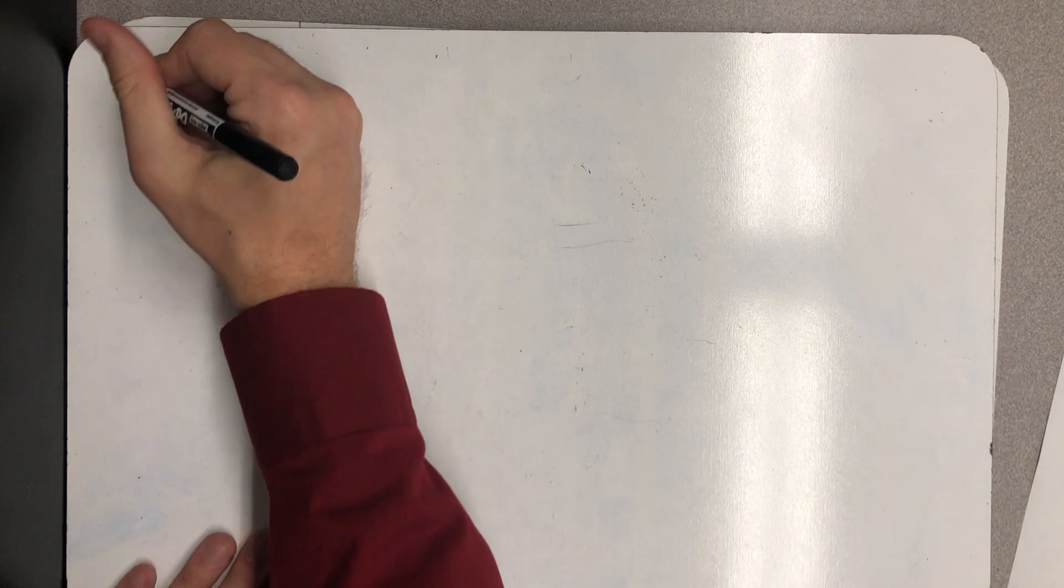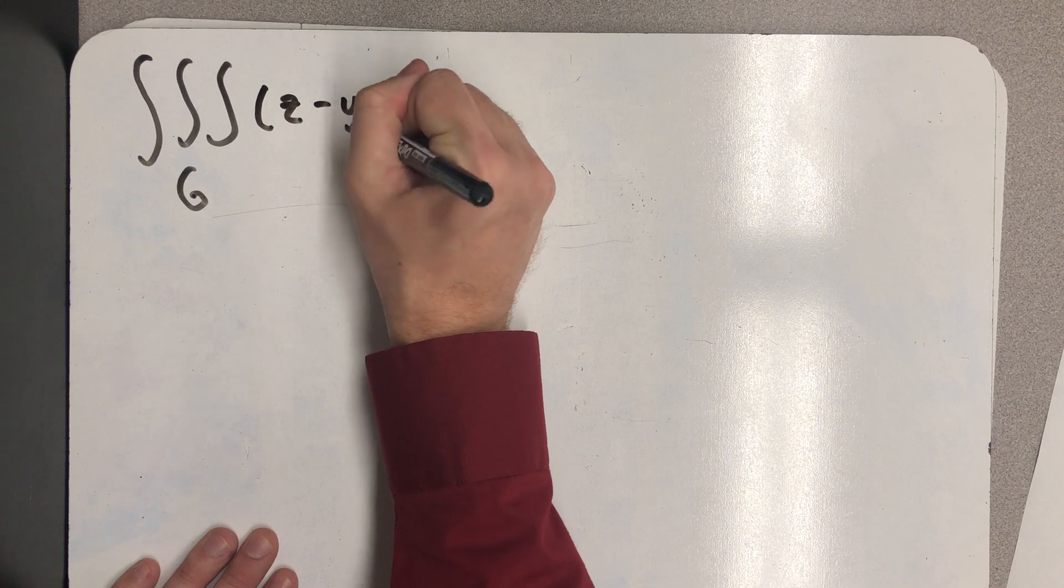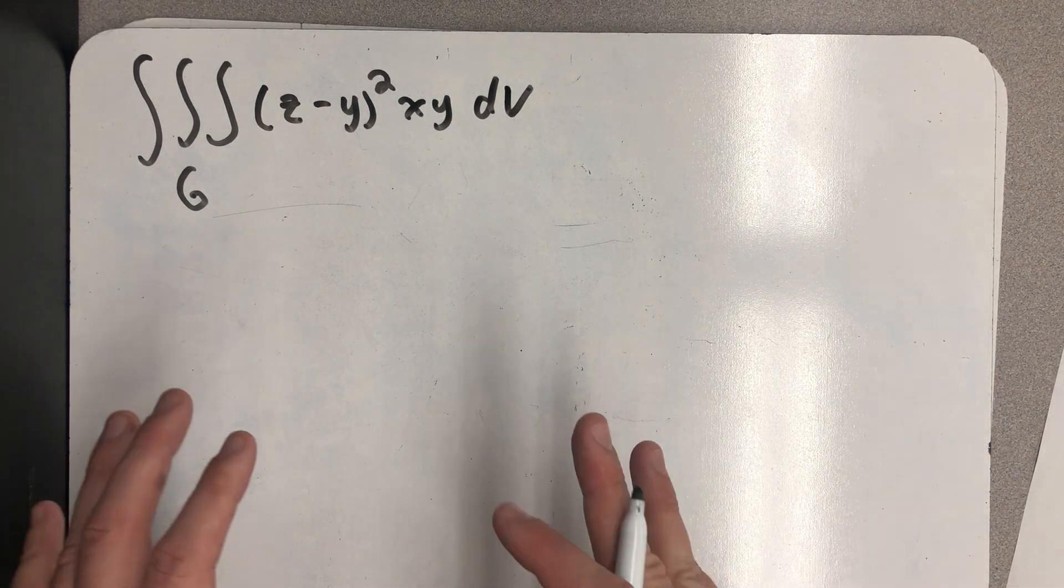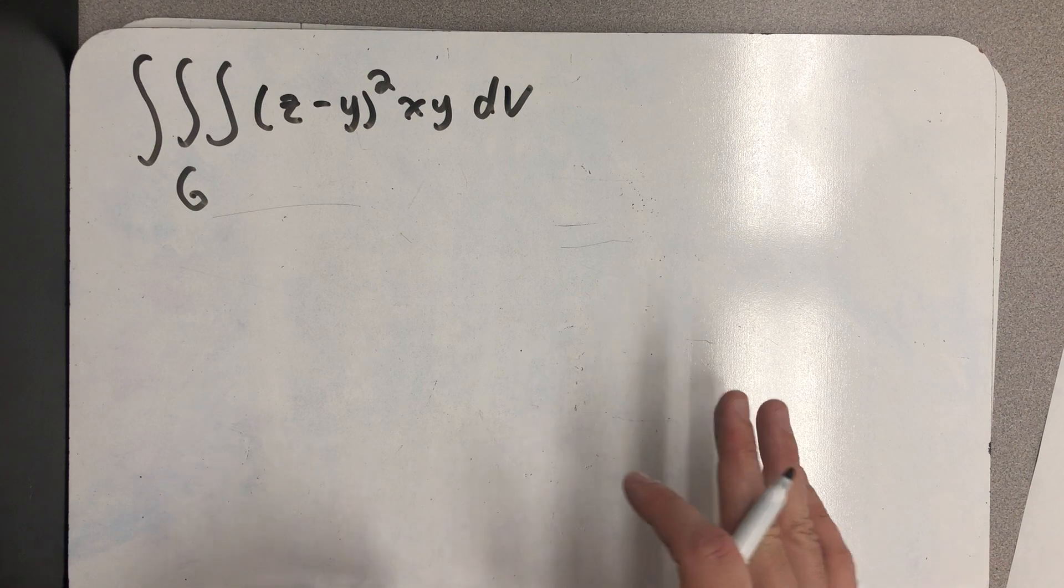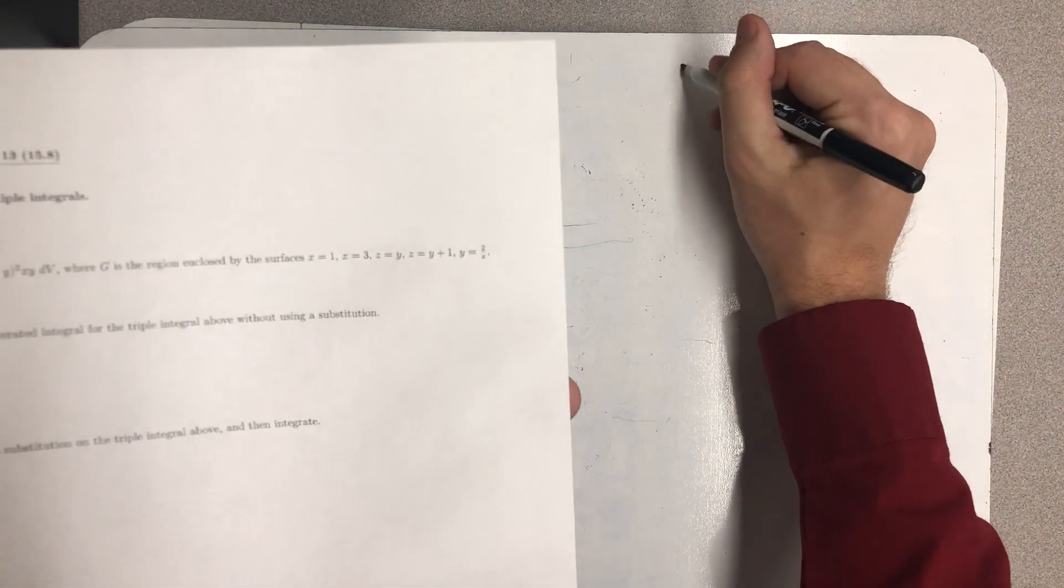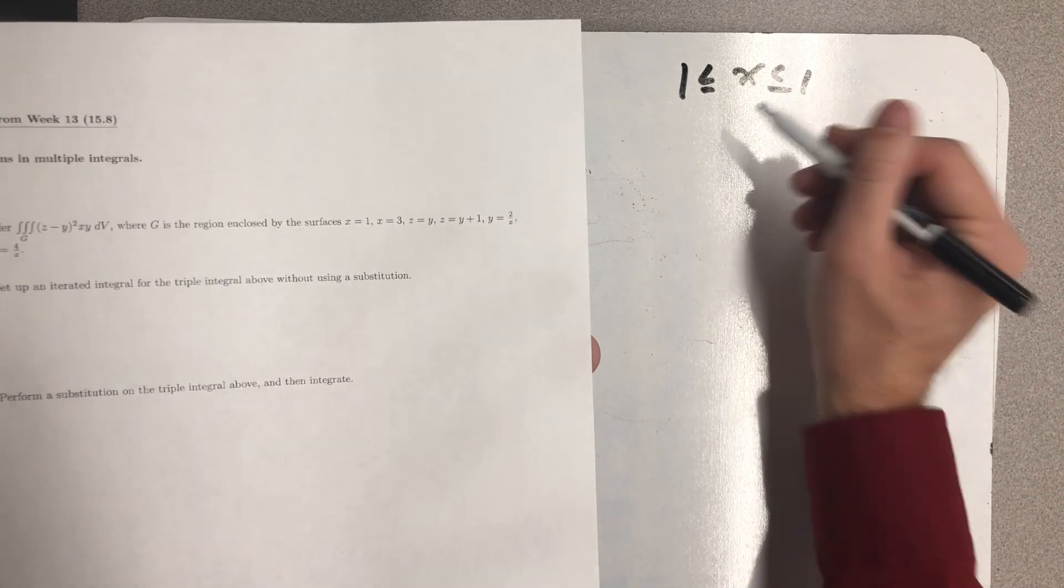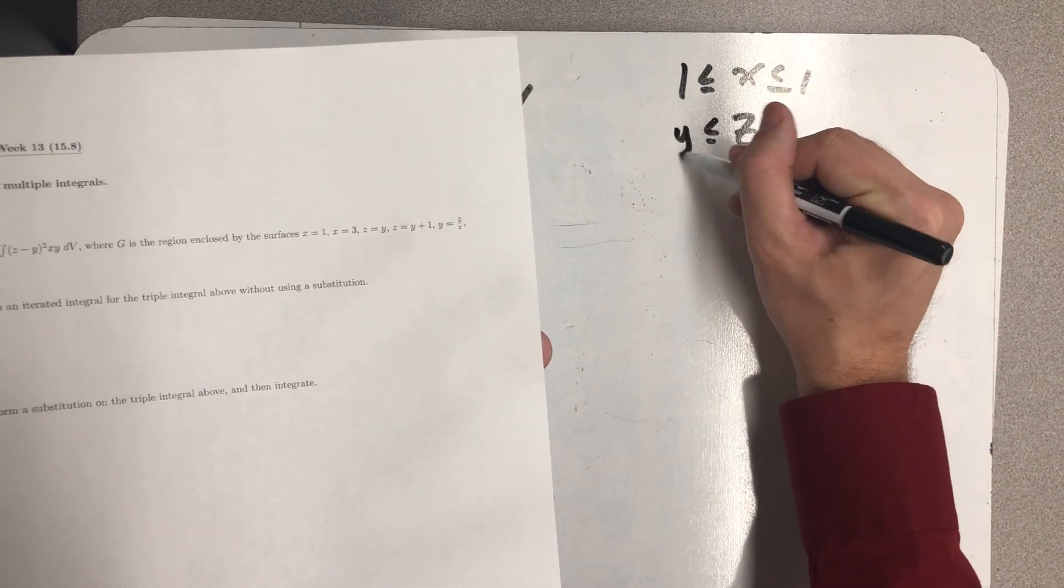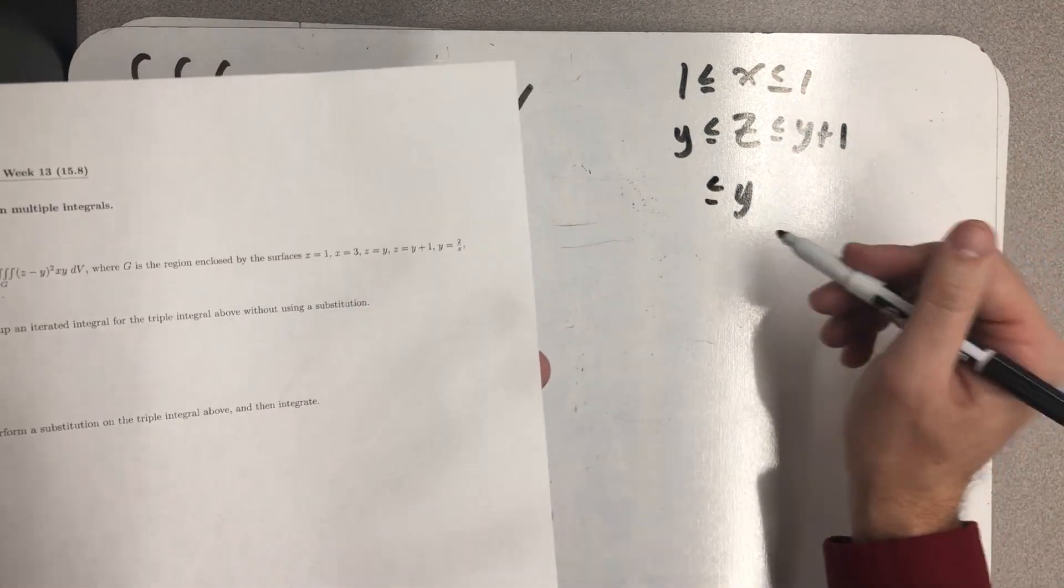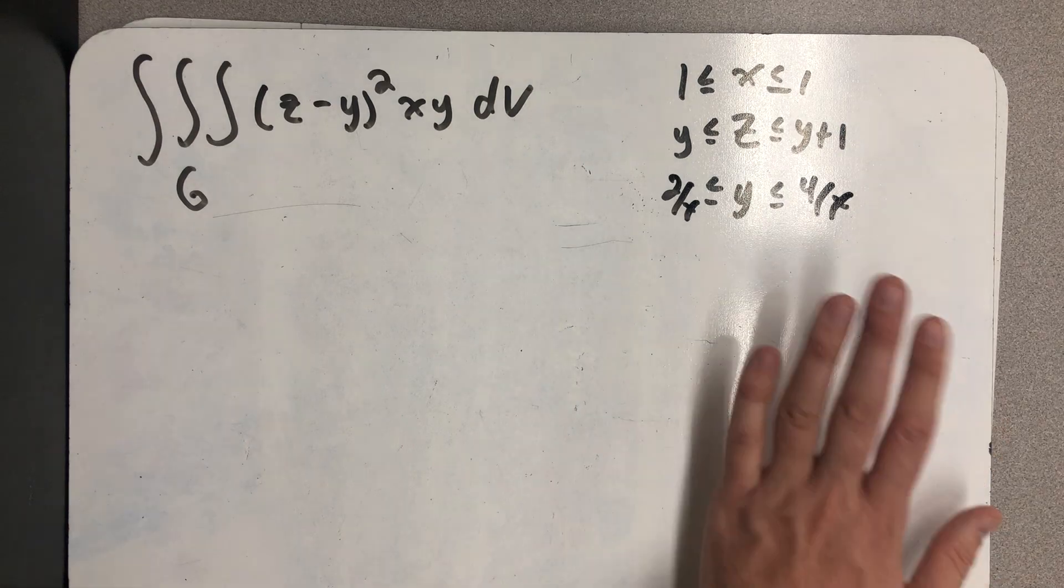First thing I'm supposed to do is to imagine this as an iterated integral without a substitution, just in rectangular coordinates without any change. So I want to think about my bounds here, and I think the first thing I'm going to do is write them down as inequalities. I know that x will be between 1 and 3. I know then that z will be between y and y plus 1. And then finally, I know that y is between two hyperbolic cylinders. All right, so there's my region G.